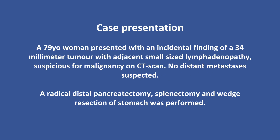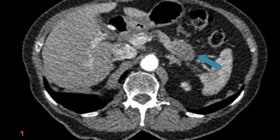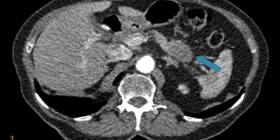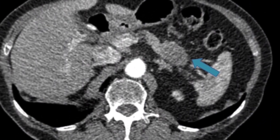A 79-year-old woman presented with an incidental finding of a 34mm tumour within the body of the pancreas, with adjacent lymphadenopathy suspicious for malignancy on CT scan. No distant metastases were seen. A radical left pancreatectomy, splenectomy, and wedge resection of stomach was performed. CT scan demonstrates the tumour within the pancreas.